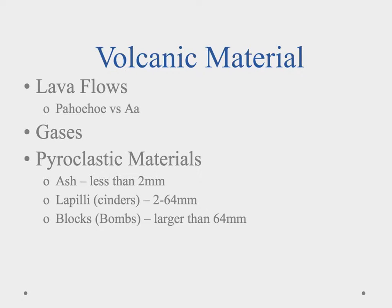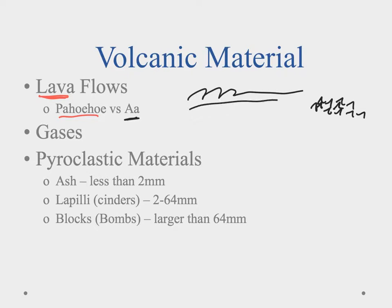Three basic types of material come out of volcanoes. First are lava flows, which come in two kinds. Pahoehoe is a smooth-flowing lava that dries with a rippled, smooth surface. A'a, on the other hand, is a bit slower with more gas content, creating really sharp, rough lava rock areas. The type of flow is determined by viscosity — low viscosity produces pahoehoe, while higher viscosity produces a'a flow.